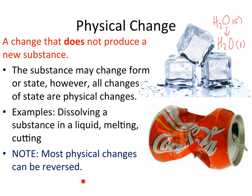Most physical changes can be reversed. For example, we can refreeze the water to create ice cubes. If we try to stretch out this can, we can probably get something very close — we won't get it exactly perfect, but we'll still have an aluminum can that can hold some kind of liquid.